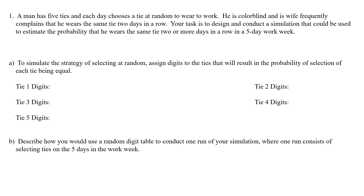For part A, we're going to simulate by assigning random digits to the ties so that the probability of selecting each tie is equal. We have digits 0 through 9 and five ties, so: digits 0 and 1 are tie 1, 2 and 3 are tie 2, 4 and 5 are tie 3, 6 and 7 are tie 4, and 8 and 9 are tie 5.